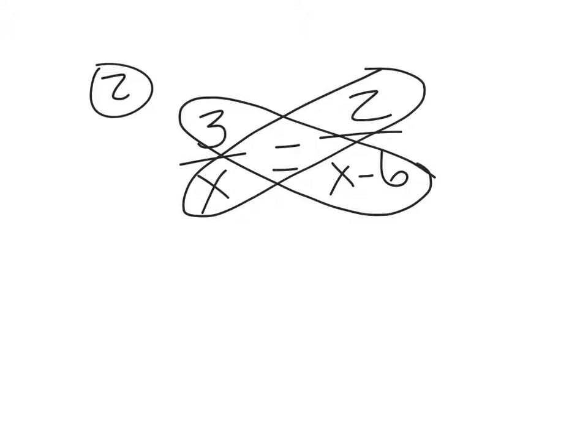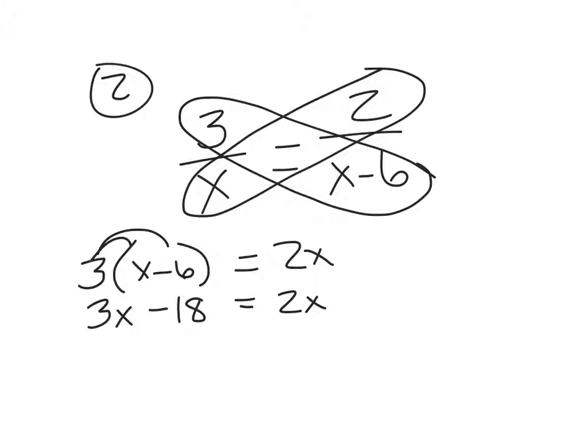Number 2. So I have 3 over x equals 2 over x minus 6. So, set this up first. We're going to cross. Does it matter? It doesn't matter which one. I like to do the one I'm going to do the most work to on the left, but it really doesn't matter. Whatever your personal preference is. Okay, now we're going to distribute. We get 3x minus 6 times 3 is 18. Now we need to move the x's on the same side. So, in this case, I'll deal with a negative number because it eventually becomes positive. So, I get negative 1x and then I just divide by negative 1. So, x equals 18.